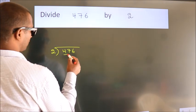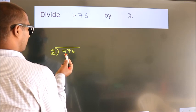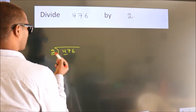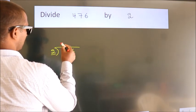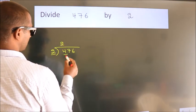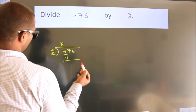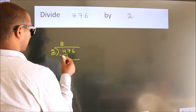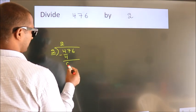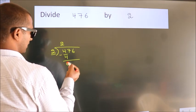Here we have 4, and here 2. When do we get 4 in the 2 times table? 2 twos are 4. Now we should subtract. We get 0.